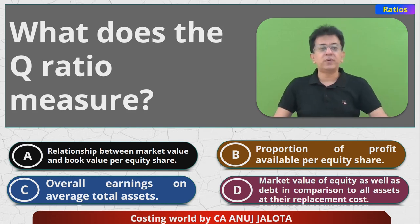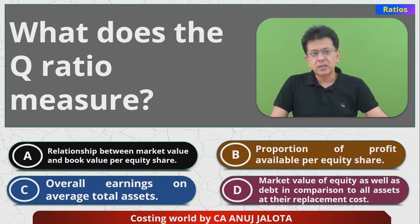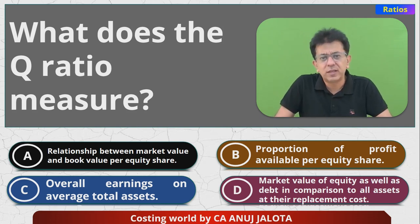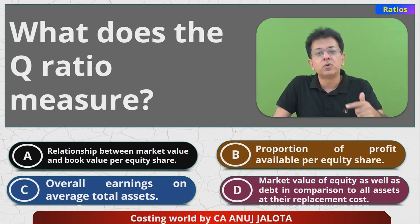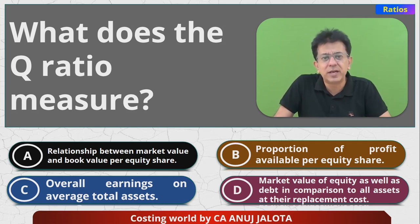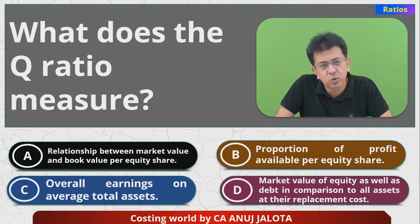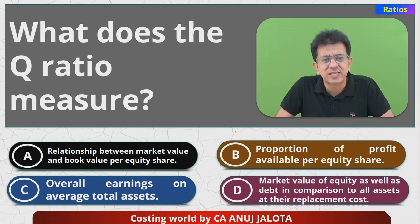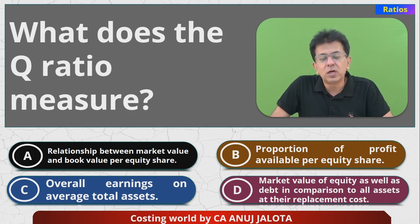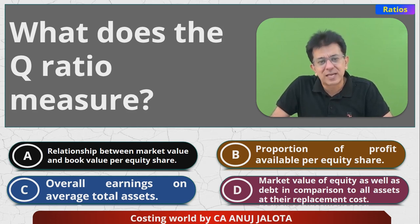Option A — relationship between market value and book value per equity share — is simply how many times the share is trading compared to book value. Book value per equity share is face value plus proportionate reserves and surplus, minus miscellaneous expenses if any. Option B — proportion of profit available per equity share — is exactly the definition of EPS. So A and B cannot be the answer. Option C — overall earnings on average total assets — is ROTA, return on total assets, so that's not what this ratio means.